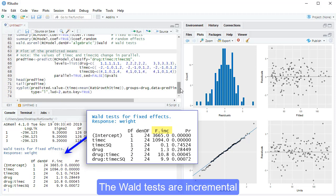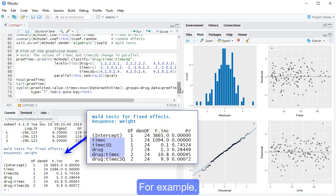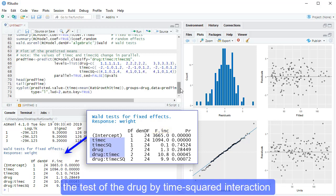The Wald tests are incremental, meaning they are conditional on the order in the table. For example, the test of the drug-by-time-squared interaction represents the effect of adding this term to a fixed model already containing the intercept, time, time-squared, drug, and drug-by-time.